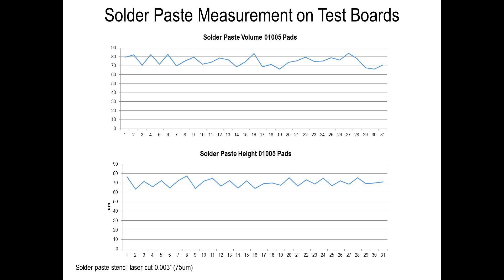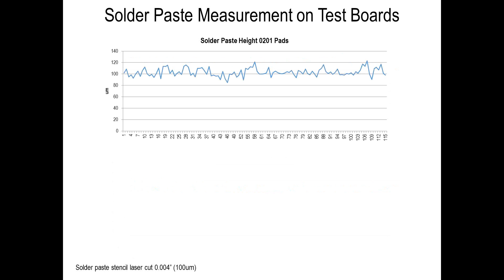In terms of printing, based on the tests that we've done, we've been fairly successful. These results give you an understanding on 01005 pads. This is with a 3 thou stencil — we've actually gone down to 3 thou as opposed to 4 thou for this technology test. However, you might need 4 thou to allow you to compensate for other components on the printed circuit board. When we've gone down to the next generation, we've got fairly good consistency on the print deposits for the 0201 with the 4 thou or 100 micron stencil.